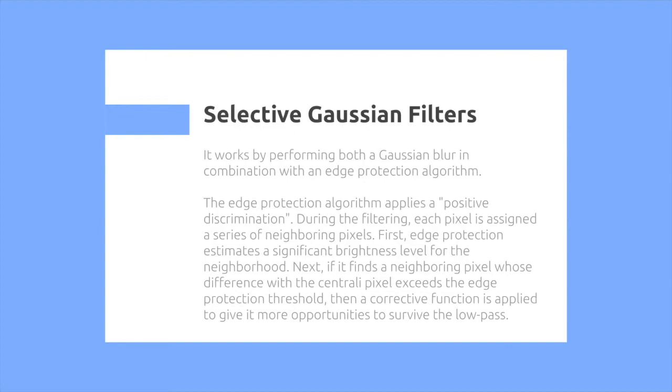The edge protection algorithm applies a positive discrimination. During the filtering, each pixel is assigned a series of neighboring pixels.